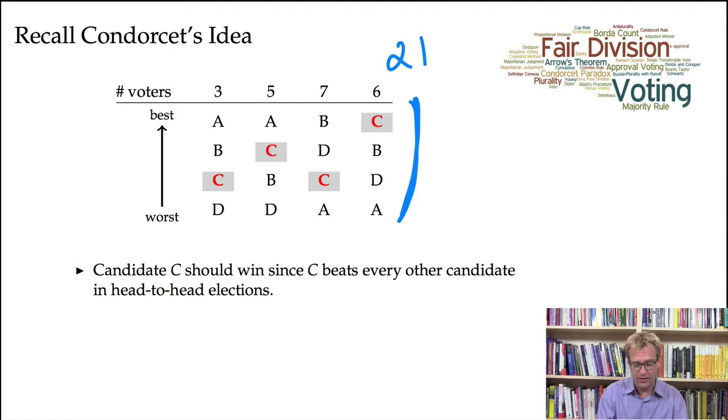Each of these voters rank the four candidates in a linear ordering, so they give a strict ordering over all of the candidates, and those orderings are divided into four groups, as you see in this table right here.